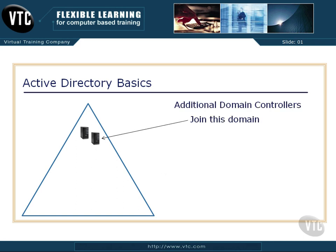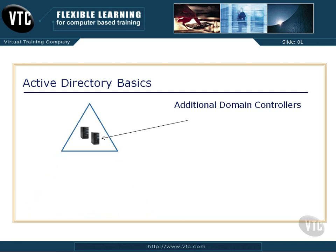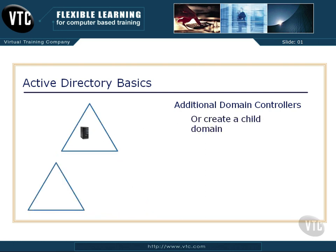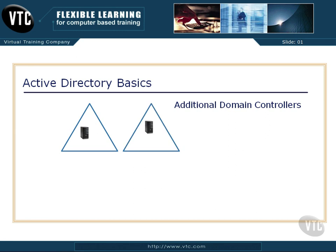I can add an additional domain controller to join this domain, or that additional domain controller can create a child domain. Notice there is an explicit trust set up between those domains. That domain controller could also have created a new forest. So that's kind of the way to think about what's going on with domain controllers, Active Directory, domains, and organizational units. If you've been around a while this should be old hat, but you will see questions that assume you understand this level of functionality with Active Directory.